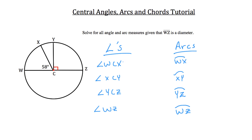So let's begin with the angles. We know that angle W, C, X is 58 degrees because they told us that. And we know that angle Y, C, Z is 90 degrees because that was also provided. And we also know that angle W, C, Z is equal to 180 degrees.